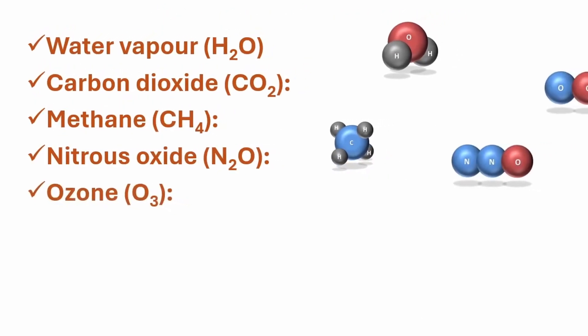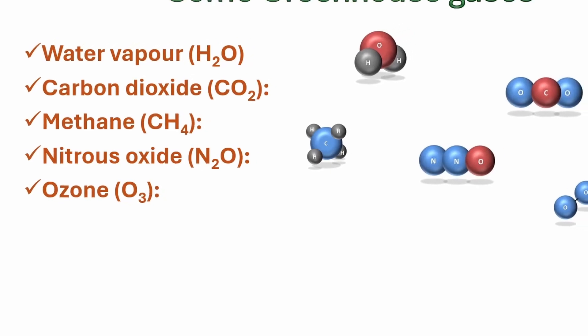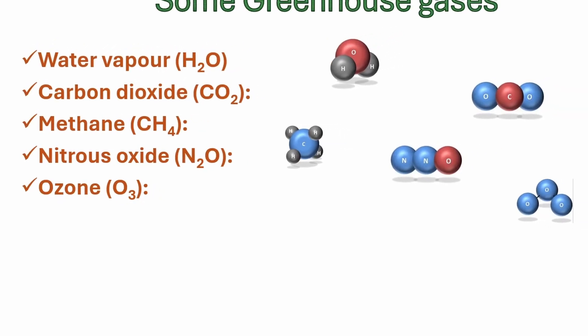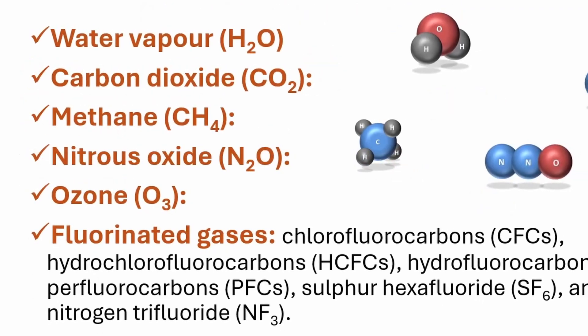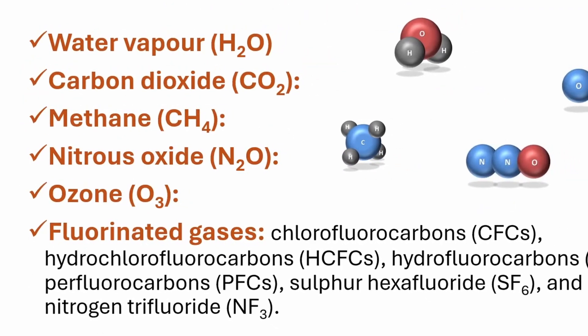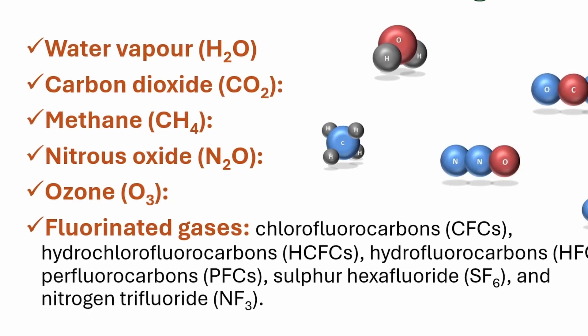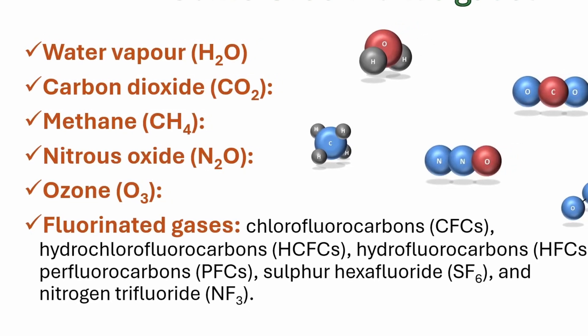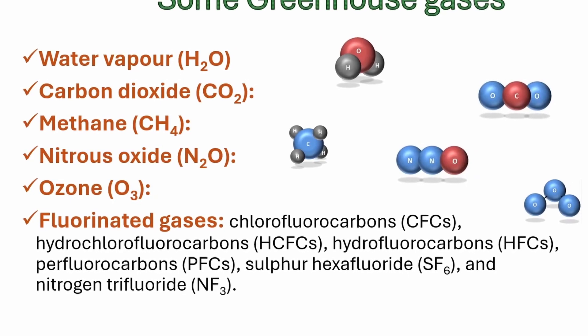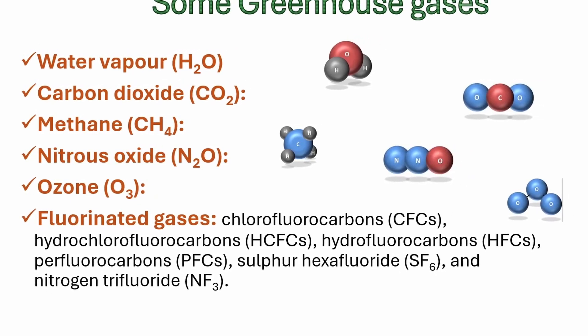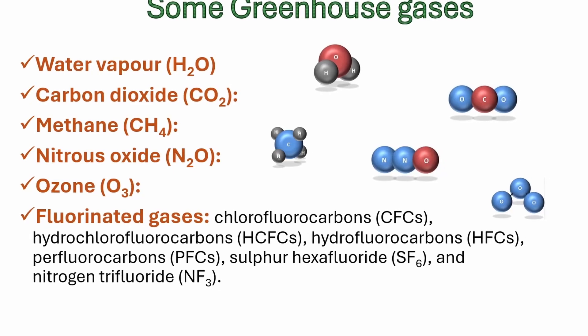Ozone, a greenhouse gas that is formed by chemical reactions between oxygen and other pollutants. And the fluorinated gases, a group of synthetic greenhouse gases that are used in various industrial applications such as refrigeration, air conditioning, aerosols, and electrical equipment.